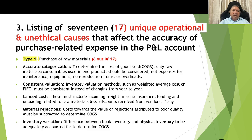Number 2, consistent valuation: inventory valuation methods such as weighted average cost or FIFO must be consistently used instead of changing from year to year. Number 3, landed cost: this must include incoming freight, marine insurance, and loading and unloading related to raw material cost, less discounts received from the vendor if any. Number 4, material rejections: cost towards the value of rejections attributed to poor quality must be subtracted to determine the cost of goods sold. Number 5, inventory valuation: the difference between book inventory and physical inventory must be adequately accounted for to determine the cost of goods sold.